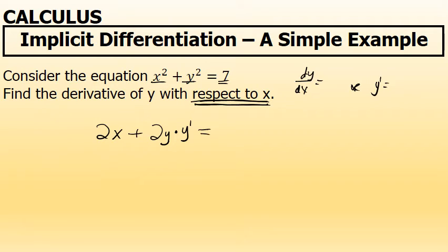On the other side of the equation, 7, the derivative of 7 with respect to x is 0. The derivative of any constant with respect to x or any variable is 0.